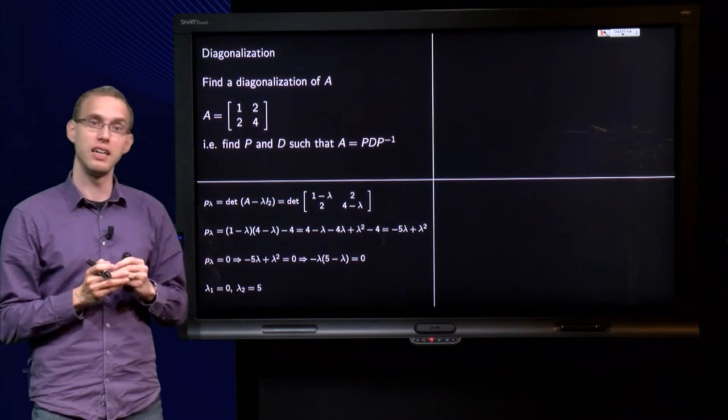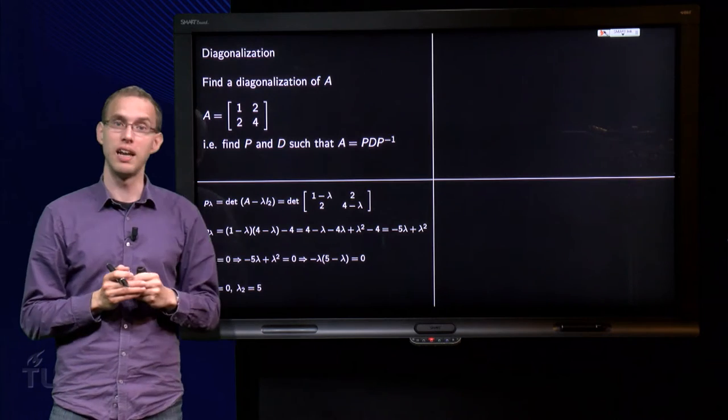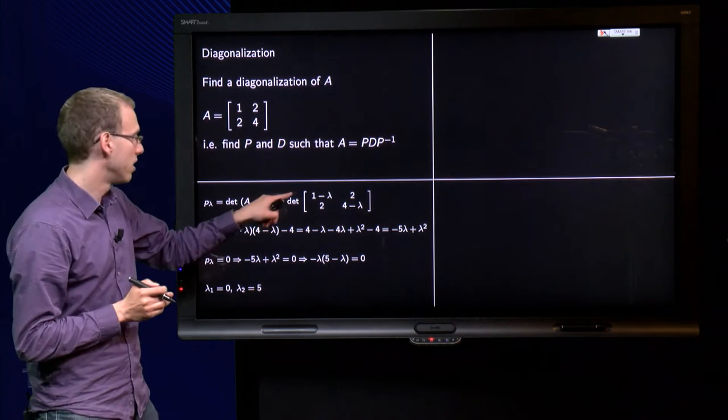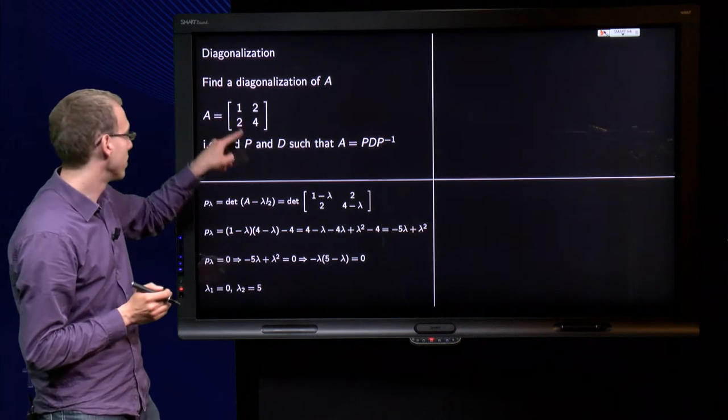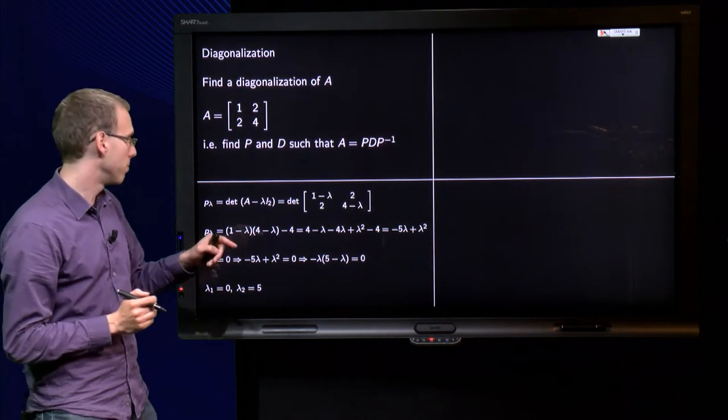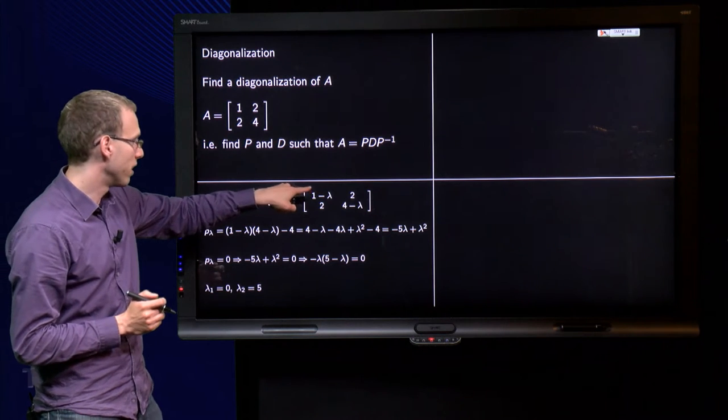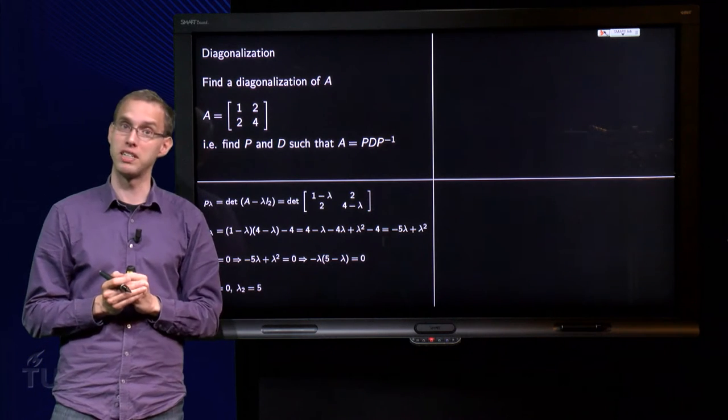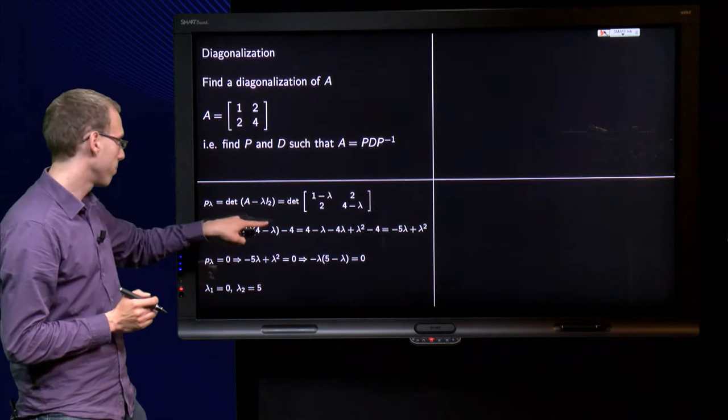So, P lambda equals the determinant of A minus lambda times the identity matrix, so determinant where you add minus lambdas over here and over there on the diagonal. The determinant of this matrix over here equals 1 minus lambda times 4 minus lambda minus 4.